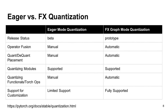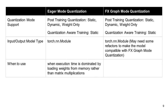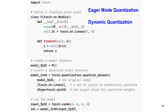PyTorch offers two types of quantization modes. The first is called eager mode and the second is the FX graph mode. In the eager mode, most things are manual. In the FX mode, many things can be automated. Both modes support static quantization, dynamic quantization, and quantization-aware training. Let me show you some code snippets of PyTorch's support for quantization.